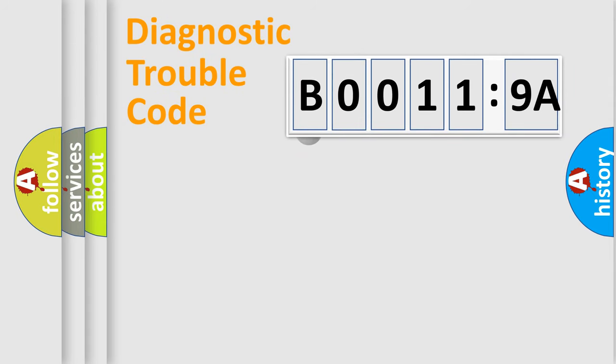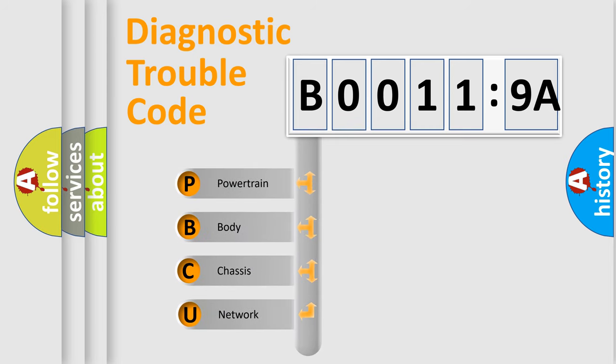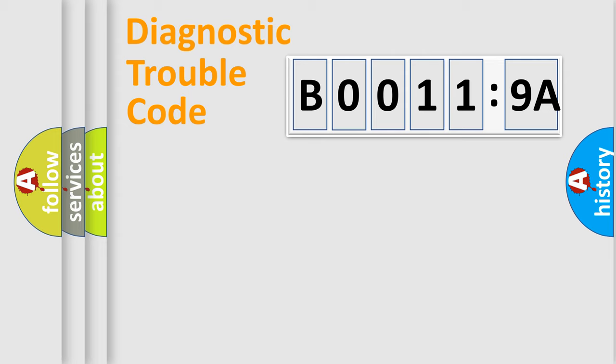First, let's look at the history of diagnostic fault code composition according to the OBD2 protocol, which is unified for all automakers since 2000. We divide the electric system of automobile into four basic units: Powertrain, Body, Chassis, and Network.